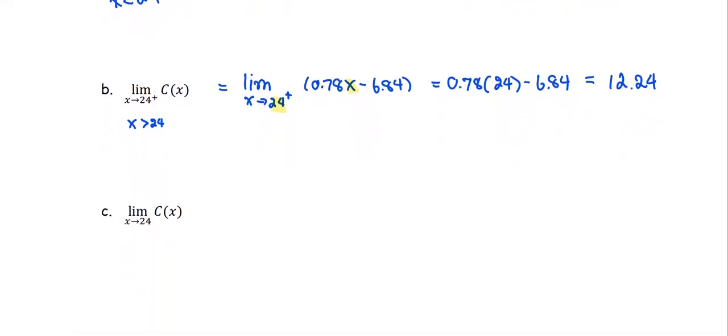Now, the last part: the limit of the cost as x approaches 24. This is the two-sided limit.